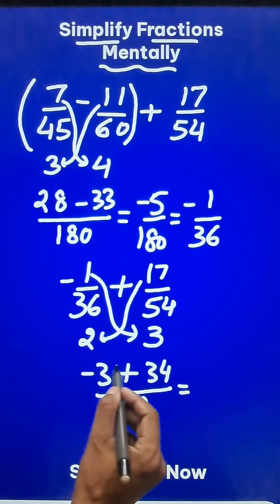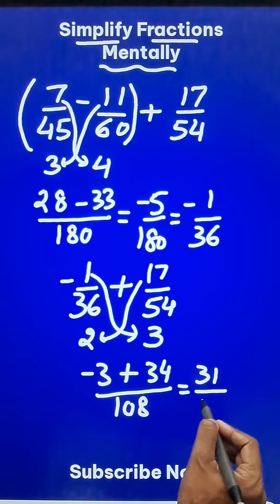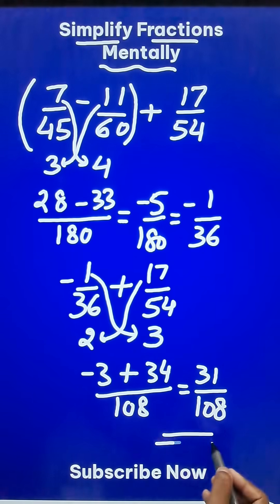So your answer for the question: 34 minus 3 is 31 and divide that by 108. Isn't that an amazing method of simplification of fractions?